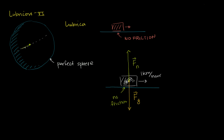Let's continue with our study of the planet Lubricon 6. One thing I did not tell you in the last video is that Lubricon 6 is not rotating at all. And because it's not rotating, it really cannot have an equator. So when we talked about the path of this frozen sock, instead of saying it's traveling across an equator, I should have said it's traveling along a great circle.